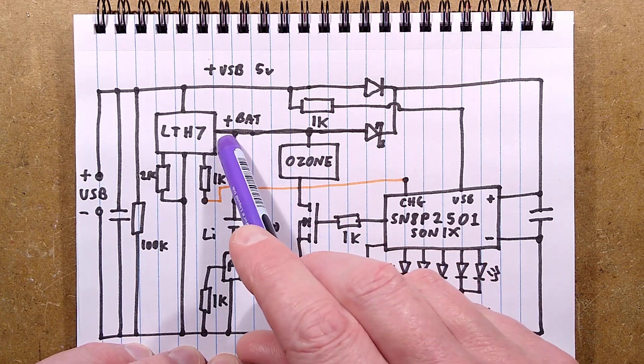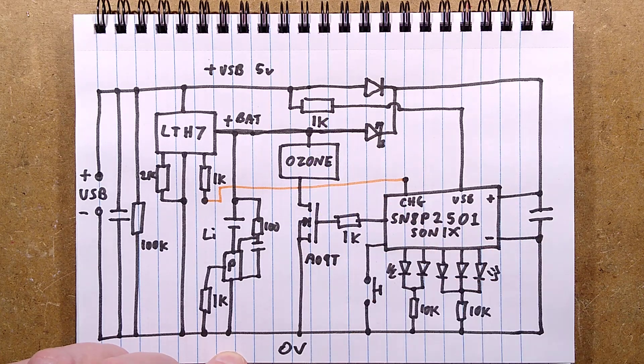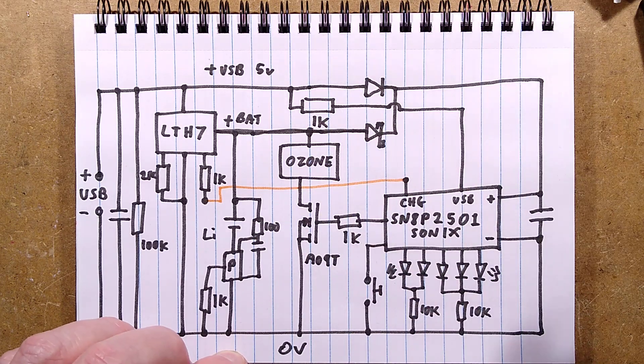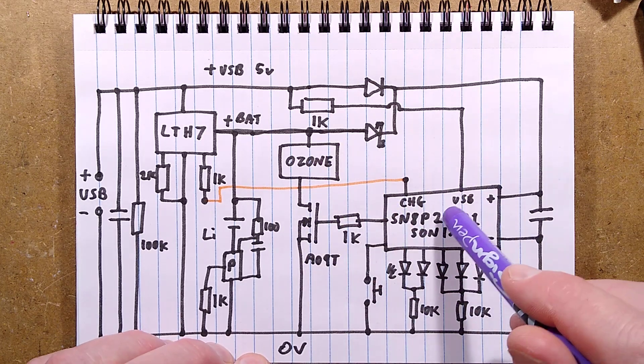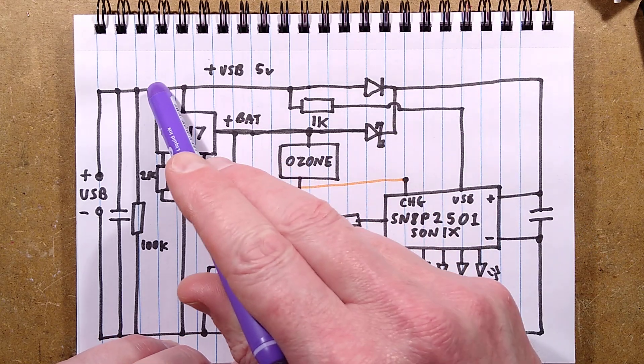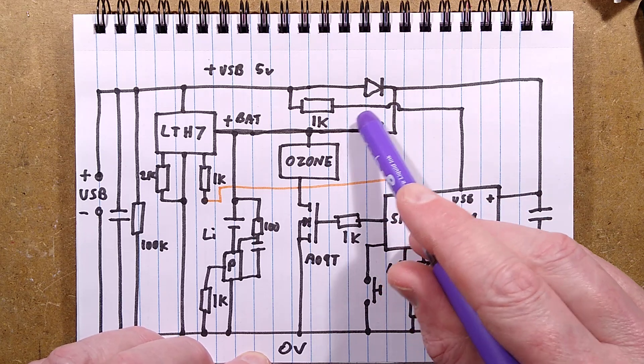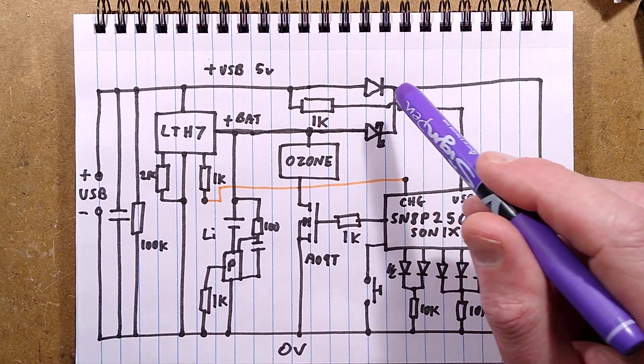The battery voltage then does two things. It goes to the ozone generator, the little module itself, this little module which is switched by that little MOSFET. But it also goes to the processor, but it does so via a Schottky diode, and the processor is also powered directly from the USB supply by a standard silicon diode. This one will drop about 0.2 volts, this one will drop about 0.6.